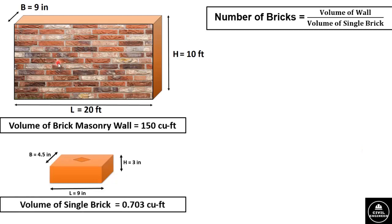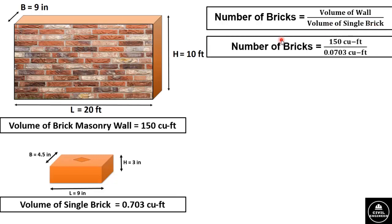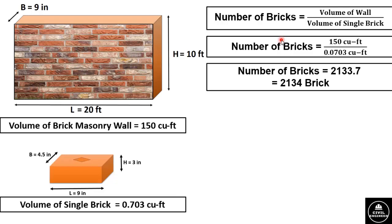Now that we have the volume of the wall and the volume of a single brick, the number of bricks required can be calculated using: Number of Bricks = Volume of Wall ÷ Volume of Single Brick. Substituting the values: 150 ÷ 0.0703 = 2133.7, or approximately 2134 bricks.